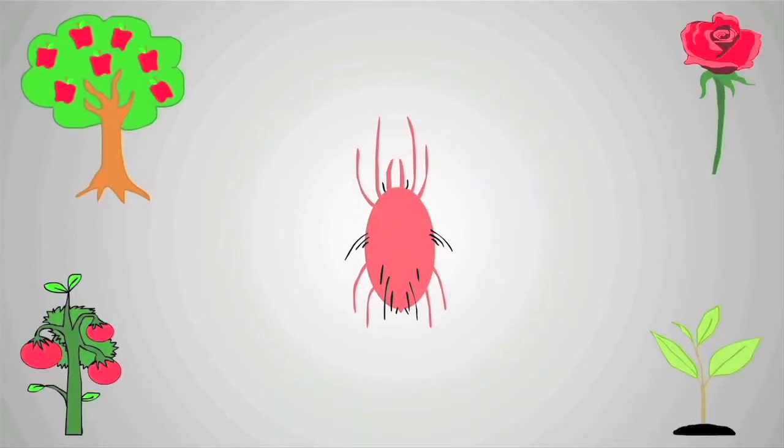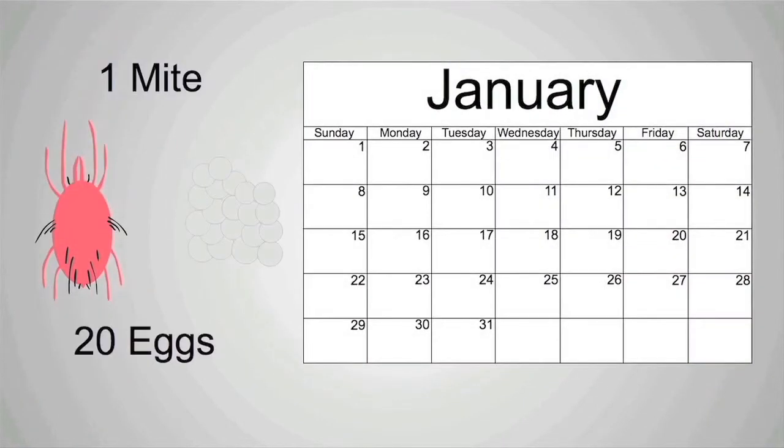Spider mites attack a wide range of garden plants, fruits, flowers, and vegetables. They also reproduce extremely fast.